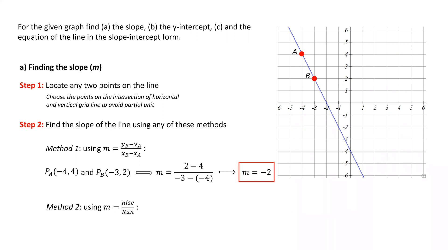That means we choose a starting point, which can be either point A or B, and we count the number of vertical and horizontal units to get to the other point.